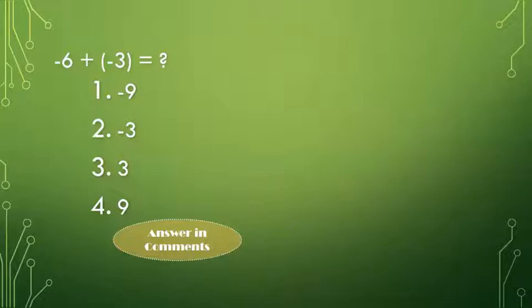This is another example: minus 6 plus minus 3. As we learned in the addition rule, when the signs are the same we just have to add and keep the same sign. So minus 6 plus minus 3 gives us minus 9, and that is our answer.